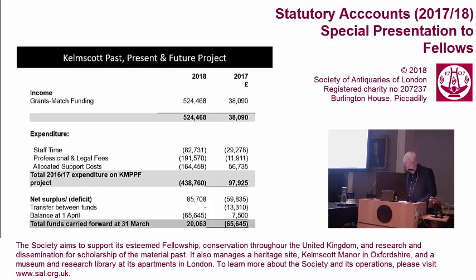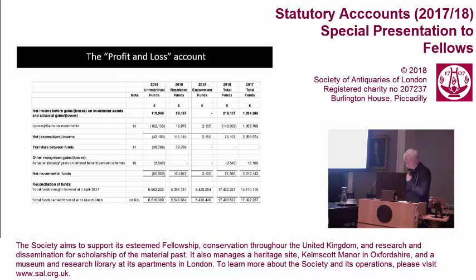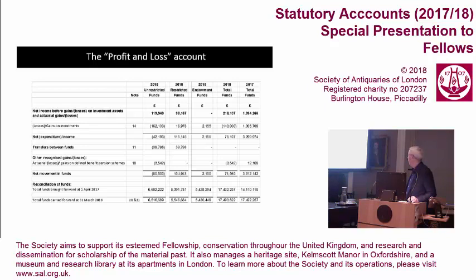Moving briefly to the profit and loss account: the investment portfolio was valued at £143,000 lower this year. Actuarial losses in the year were £3,500 compared to a gain of £12,000 in the previous year. This gives a surplus of £71,000 in the year.